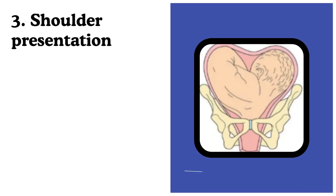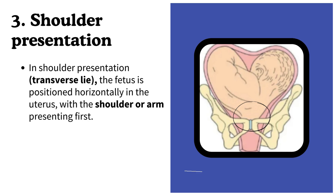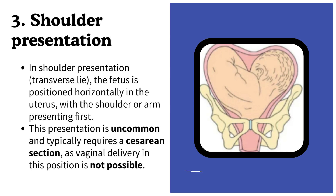Number 3: Shoulder presentation. In shoulder presentation, the baby is in a transverse lie, meaning the fetus is positioned horizontally in the uterus with the shoulder or arm presenting first. This presentation is uncommon and typically requires a cesarean section, as vaginal delivery in this position is not possible.